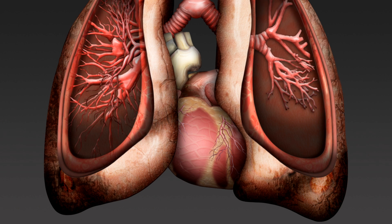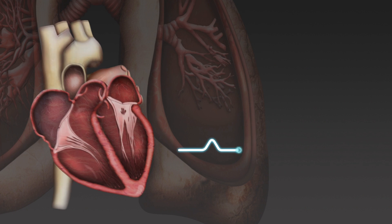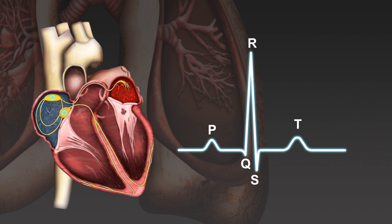The electrocardiogram, or ECG, is a recording of the heart's electrical activity via leads placed at standardised points on the subject's body. This animation shows how the different ECG waves are produced during a cardiac cycle.